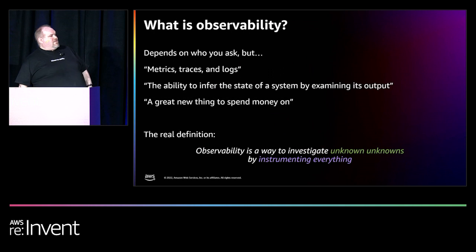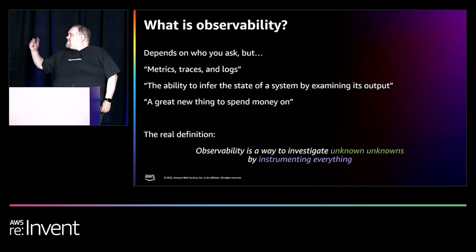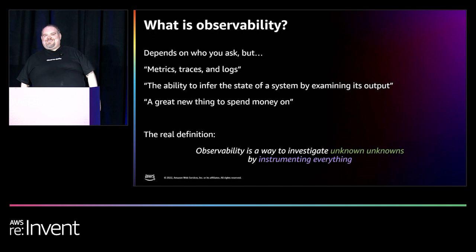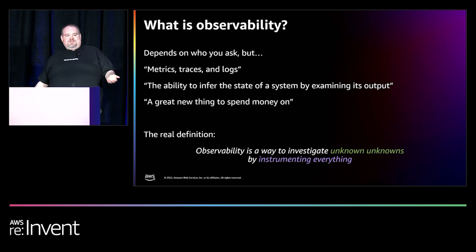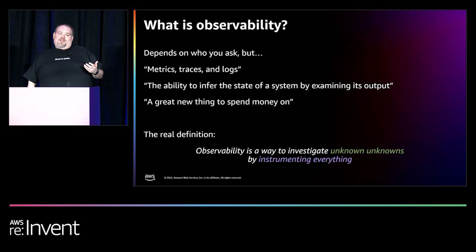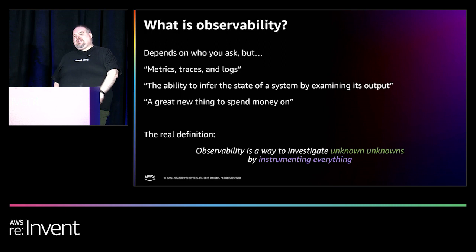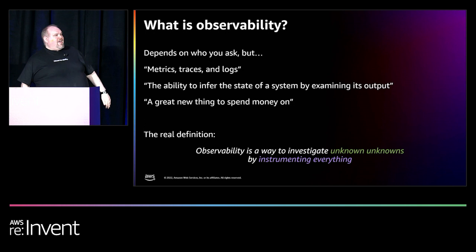Let's finally answer: what is observability? The top answer — metrics, traces, and logs — everybody's heard that. The three pillars of observability. But that isn't observability. Those are data sources. That's like saying a cheeseburger is meat, lettuce, and tomatoes — those are the parts, but that isn't observability. The term came from control theory back in the late 1920s: the ability to infer the state of a system by examining its output. But you can't really understand what that means in practice.